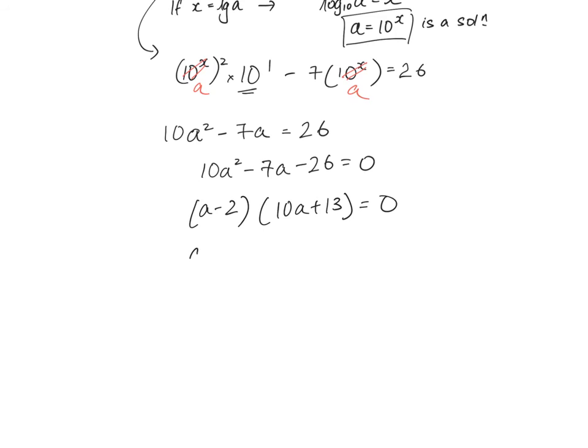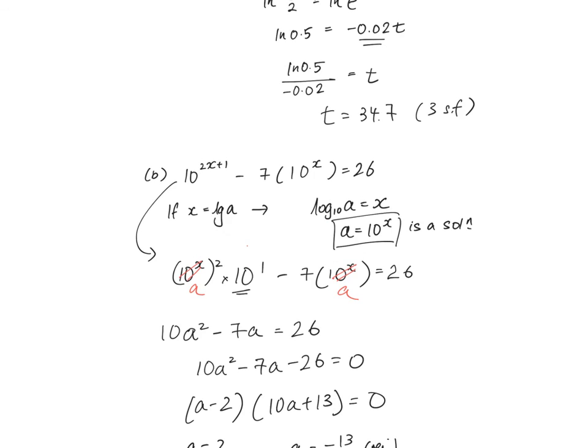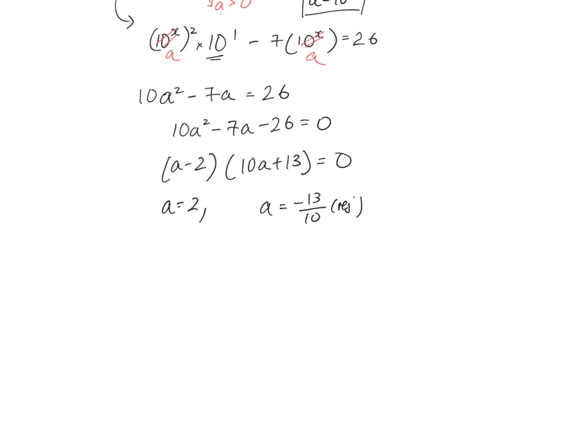Alright, and you have a equals to 2, or a equals to negative 13 over 10. Alright, but this of course has to be rejected by virtue of the fact. Remember that for log a, remember we are looking at a, so a based on this concept, a has to be positive. So this over here has to be rejected.